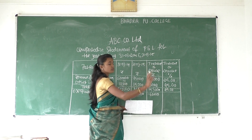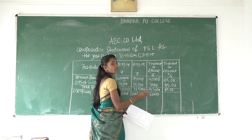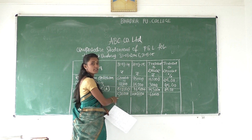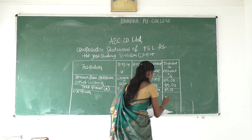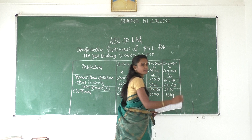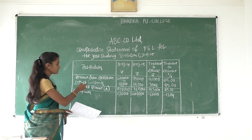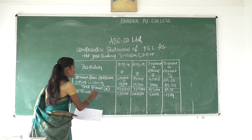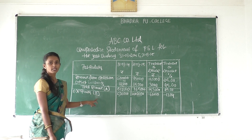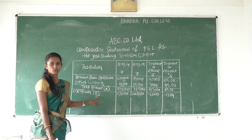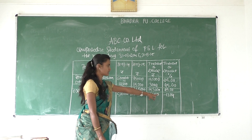Now we need to calculate the increase or decrease in percentage. The calculation is minus 66,000 divided by 5,60,000 into 100. How much? Yes, it's minus 13.04. So total expenses — minus 66,000 and minus 13.04.